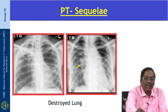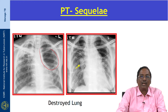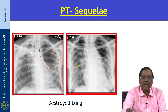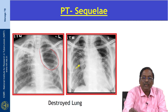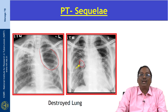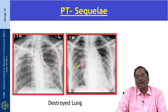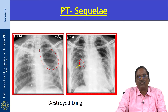This x-ray shows a large cavity — it is a destroyed lung. There is hilar enlargement, which represents a dilated pulmonary artery as a sequelae of TB, as the patient is developing cor pulmonale.